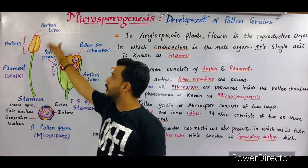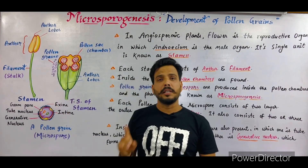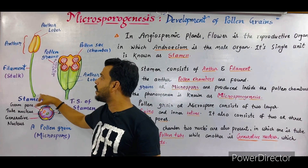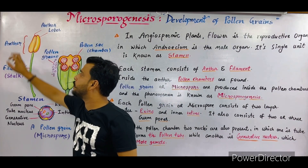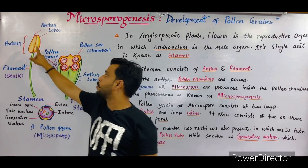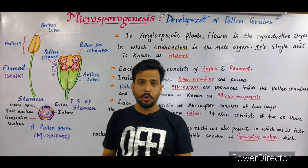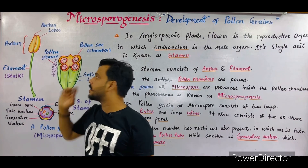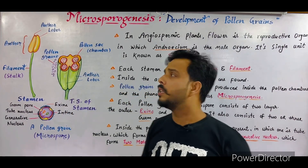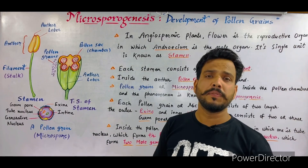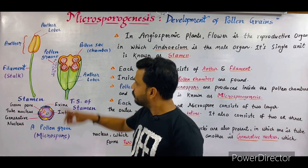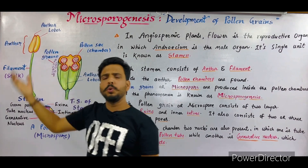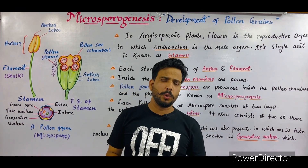The single unit of androecium is known as a stamen. As you can see in this diagram, this is a single stamen — the male organ. The upper part of the stamen is termed the anther, which consists of two lobes known as anther lobes, while the lower part is called the filament or stalk.